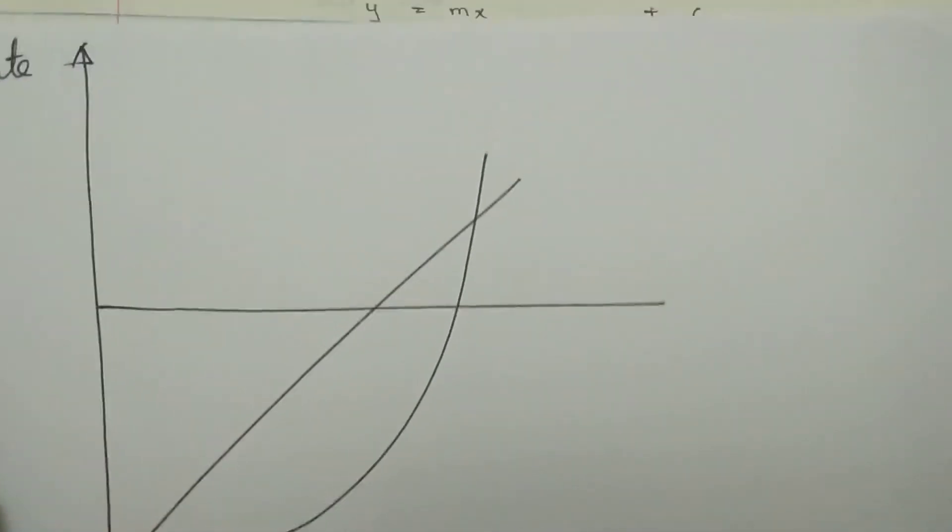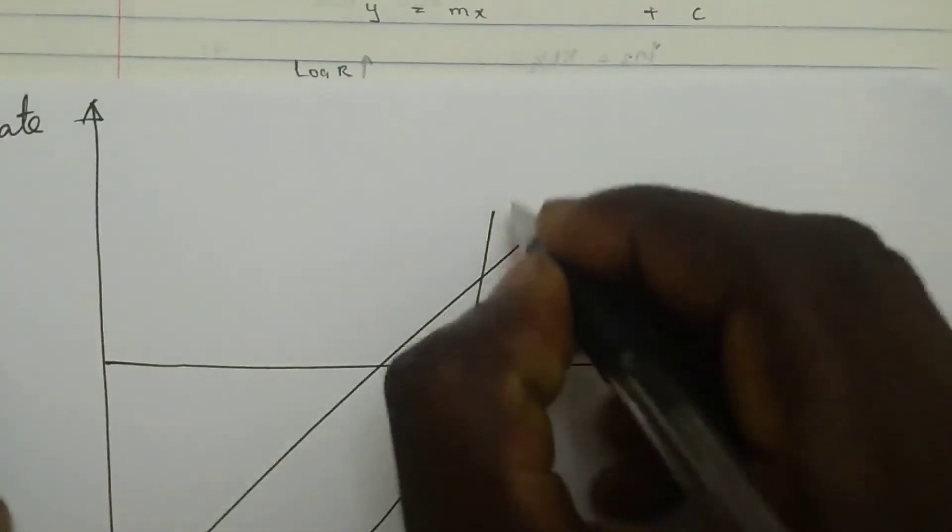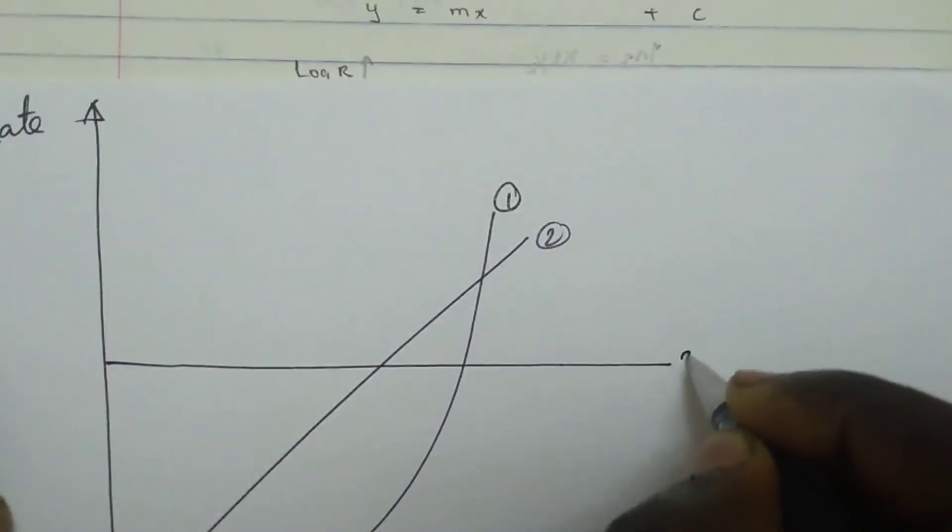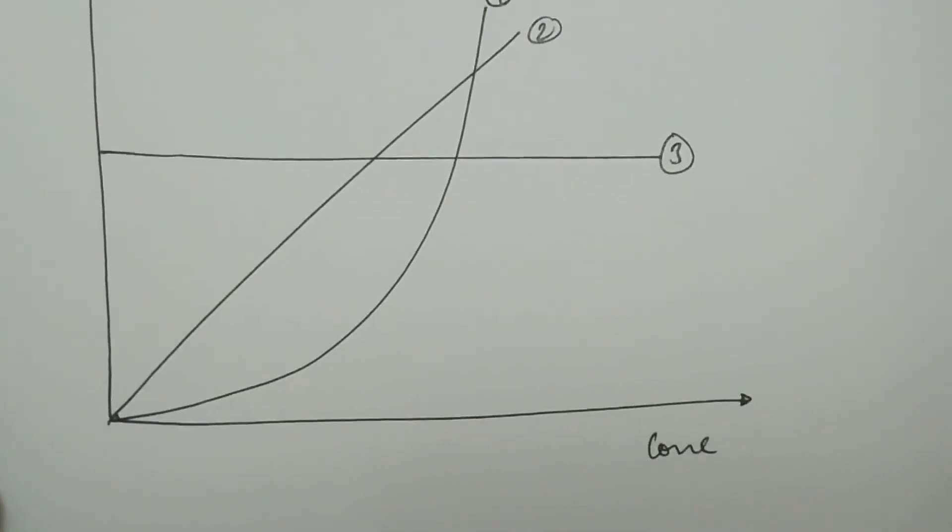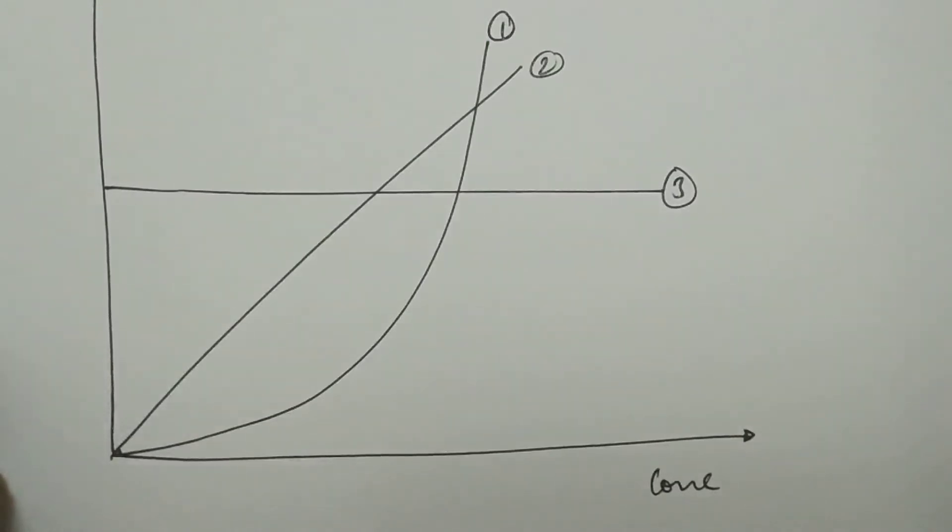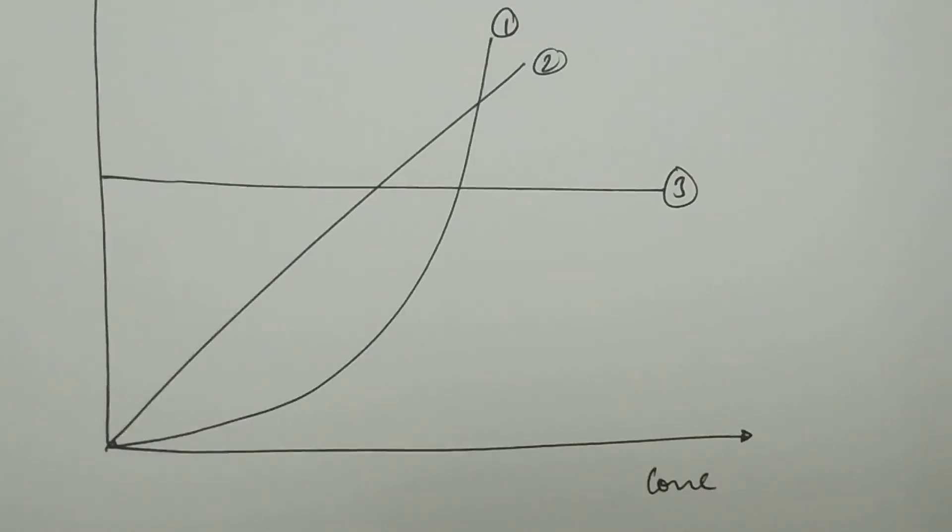Sometimes you'll be given a question in theory, with graph number one, number two, number three, and asked to say which is zero order, which is first order, and which is second order. You may also be asked to explain why. So you need to have all of these knowledges to become competent in different kinds of environments. There are also different graphs for half life.